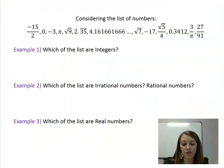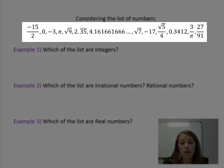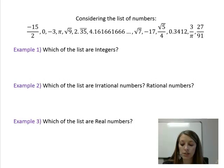The first question gives you a whole list of numbers. Then it wants to know, from this list, which are integers? That's example one. Which are irrational or rational numbers? Example two. And example three, which of that list are real numbers? What I would like you to do is pause the video and see if you can figure all of this out on your own.